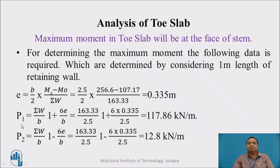P1 is the pressure at the toe end of the retaining wall. It is sigma W divided by B into 1 plus 6E by B. This is 163.33, sigma W divided by B is 2.5, 1 plus 6 into E is 0.335 divided by 2.5. This works out to be 117.86 kilonewton per meter.